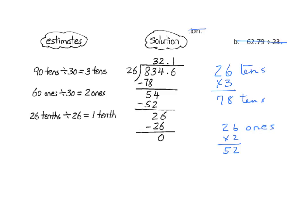Since we have 2 ones, we're going to trade those for 20 tenths. We bring down one more tenth, and now we have 26 tenths. We notice that the 26 in our problem here is the same as the 26 in our divisor. So that makes it quite easy — the estimate is 1 times 26, and minus 26 we get 0.